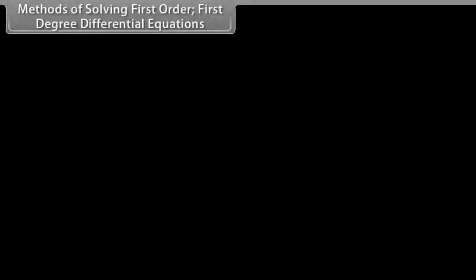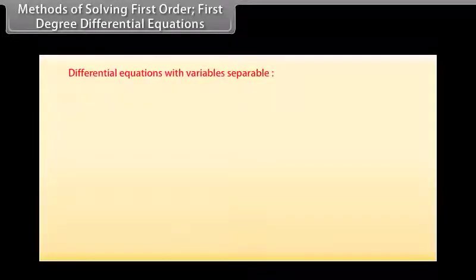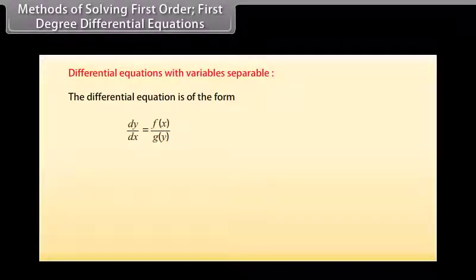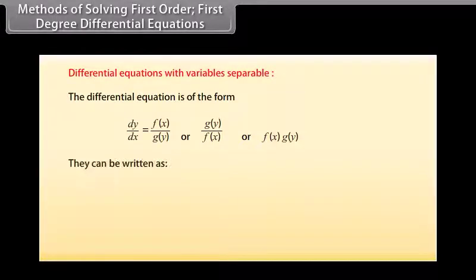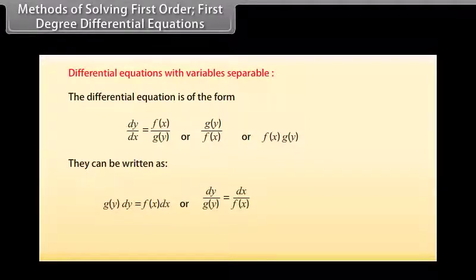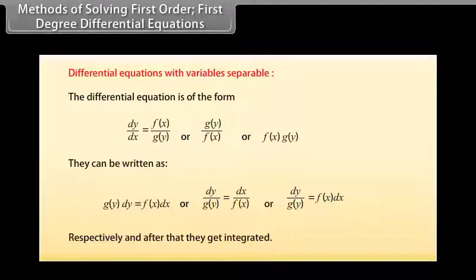Methods of solving first order, first degree differential equations — Variables separable: A differential equation of the form dy/dx = f(x)/g(y), or g(y)/f(x), or f(x)·g(y) can be rewritten by separating variables, e.g., g(y)·dy = f(x)·dx, and then both sides are integrated.